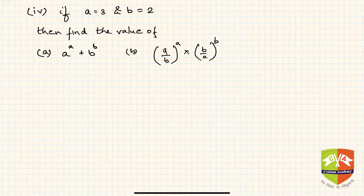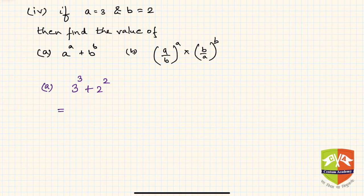In the next problem, a = 3 and b = 2, and we have to find aᵃ + bᵇ. So aᵃ = 3³ = 27 and bᵇ = 2² = 4. Hence the answer is 27 + 4 = 31.